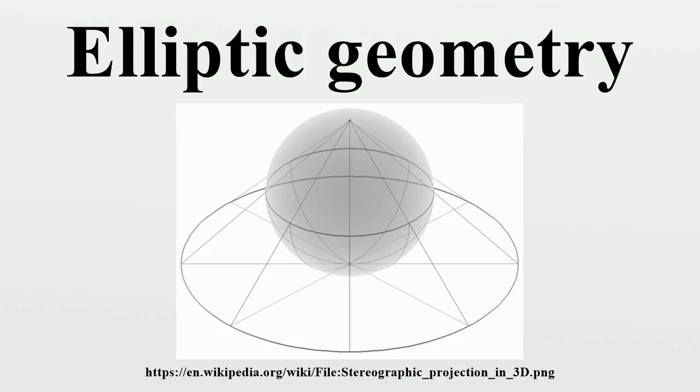Two dimensions. The spherical model: A simple way to picture elliptic geometry is to look at a globe. Neighboring lines of longitude appear to be parallel at the equator, yet they intersect at the poles.